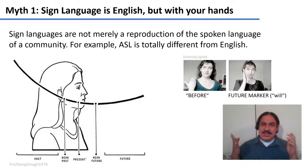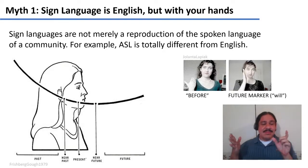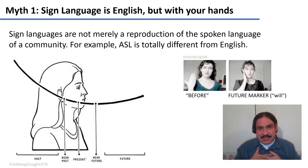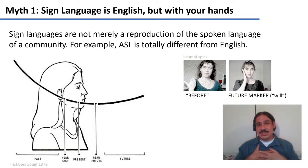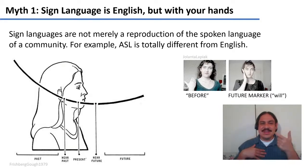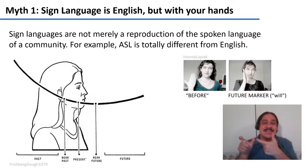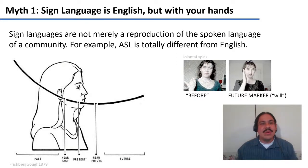So both verbs in English and in ASL work by having the verbal root and then some addition. In ASL, it will be the position of the torso. But as you can see, this is not just a sign for 'work' and a separate sign for 'past,' for example. So ASL has its own grammar that is very different from that of English.